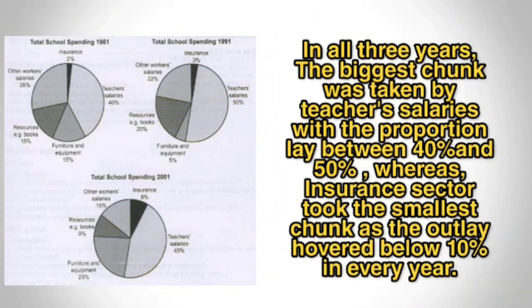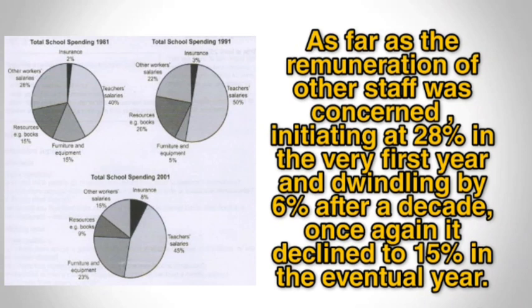The smallest chunk was the outlay on insurance, which hovered below 10% in every year. So this is how we mention it — this is the first line.